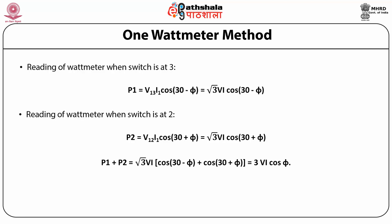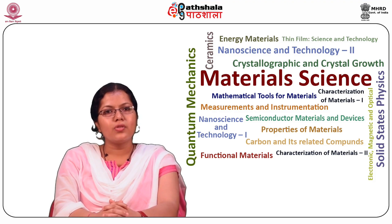Thus, P1 + P2 = √3 VI cos(30° − φ) + √3 VI cos(30° + φ) = 3VI cos φ. And tan φ = √3 × (P1 − P2) / (P1 + P2).